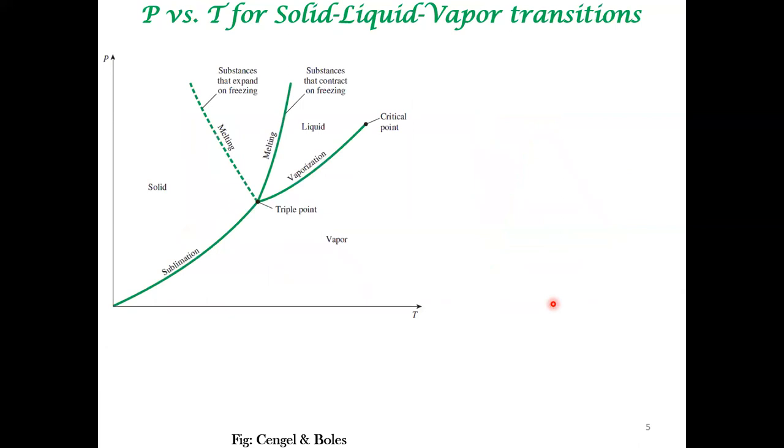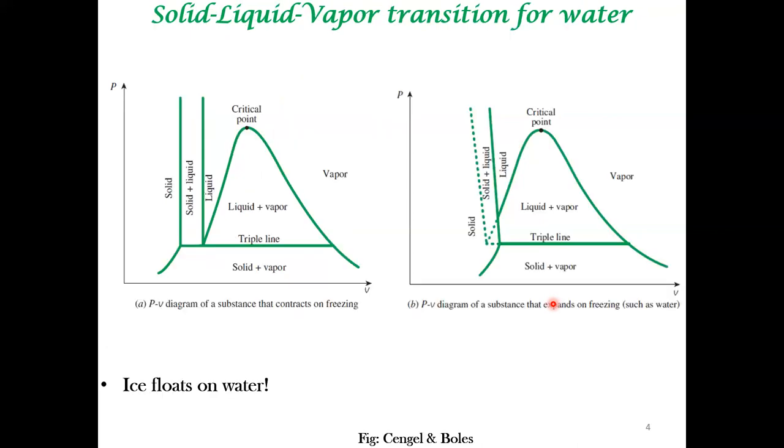The water phase diagram is probably the single most important phase diagram in human civilization. In an earlier class, I mentioned the iron-carbon diagram as the second most important. I would say the water phase diagram is the single most important phase diagram for humans.